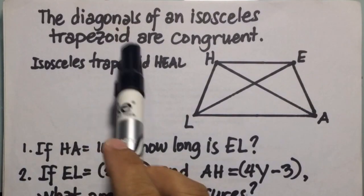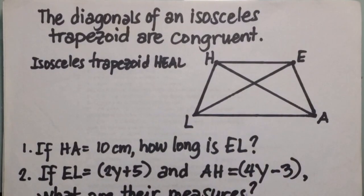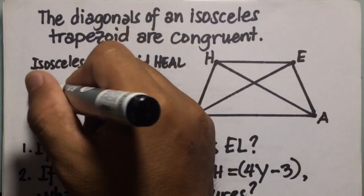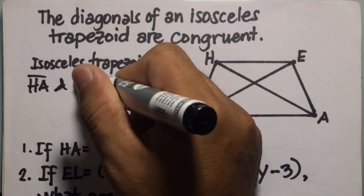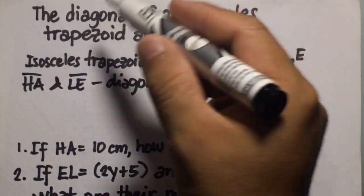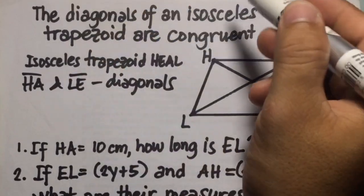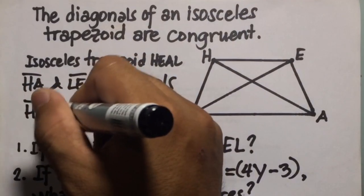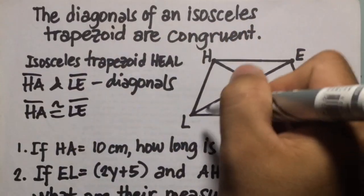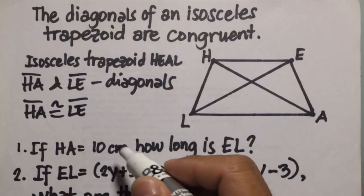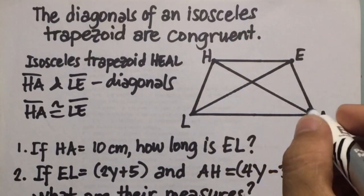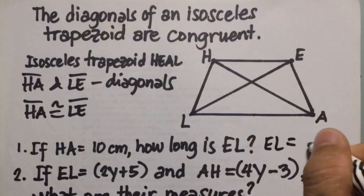The last theorem: the diagonals of an isosceles trapezoid are congruent. In isosceles trapezoid H-E-A-L, the diagonals are H-A and L-E. The theorem states that line segment H-A is congruent to line segment L-E, so they have the same measurement. Number one: if H-E is equal to 10 centimeters, how long is E-L? Since diagonals are congruent, E-L is also equal to 10 centimeters.